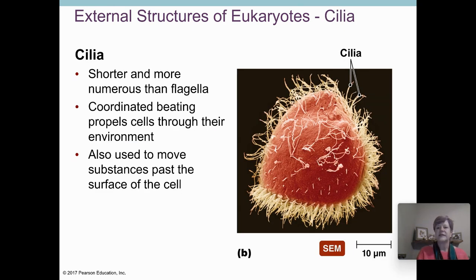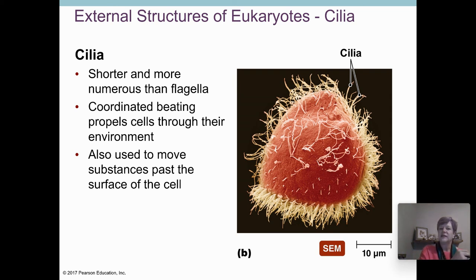Eukaryotes can also have cilia, which we didn't see in prokaryotes. Cilia also help with locomotion but are much shorter than flagella. Some cells are covered in cilia, and the other option is to have one or a couple of flagella at one end of the cell. A cell can also have neither, which means it can't move around.